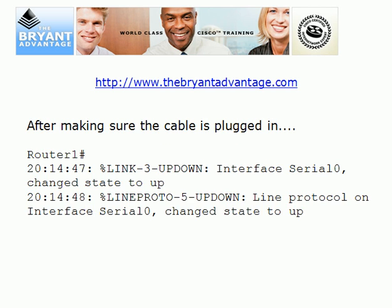When you see 'serial zero is down, line protocol is down,' start at the physical layer of the OSI model. Make sure everything's plugged in — go ahead and unplug that cable, verify you have the right cable, then reseat it. Once you see the line protocol come up, as you're seeing on screen, stick around and make sure it stays up. If the line protocol is still up after 60 to 90 seconds, you're perfectly fine.